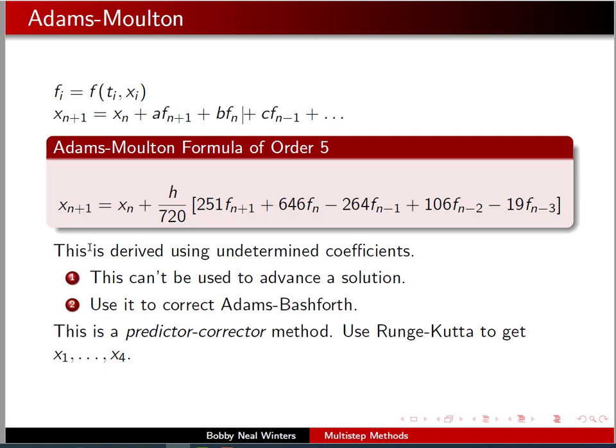And both of these have the problem that we can't predict x1 through x4 with it. I mean, we need a lot of values up front to get started. So, what we do, we use Runge-Kutta method to get x1 through x4, and then we will use Adams-Bashforth after that point and then